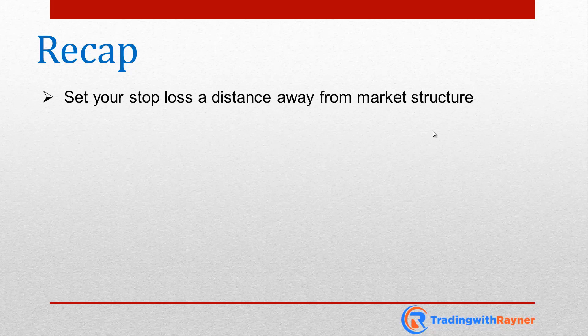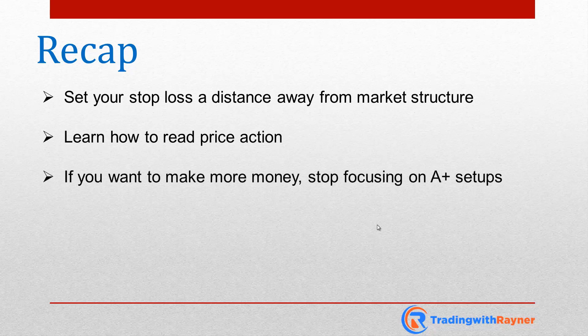Let's do a quick recap. The first reason why traders fail is they set their stop loss at an obvious level and it gets hunted. The solution is to set your stop loss a distance away from market structure, or let the market trigger those stop losses and then reverse before you enter your trade. Number two: learn how to read price action — don't be a one-trick pony. Stop waiting for price to come to a level and give you a bearish reversal before you go short, because you can also trade breakouts. Certain breakouts are high probability if you know how to read price action. And finally, if you want to make more money, stop focusing on A-plus trading setups, because those setups are far and few between. You can find a 50% win rate with an average one-to-two or even one-to-1.5 risk-to-reward setup, and if you have enough frequency of those trades, you can make more money than a trader focused entirely on A-plus setups.